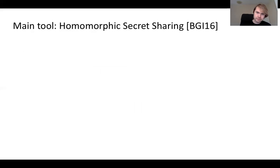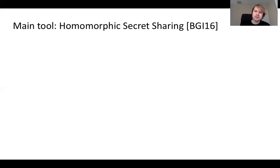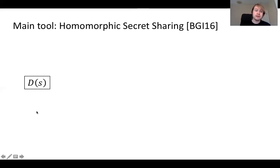Our entry point is: how can we, in one round, allow these parties to generate a huge number of OT correlations without communicating too much? Our main tool for doing this is the primitive of homomorphic secret sharing, which was introduced by BGI in 2016.